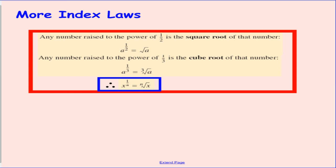Any number raised to the power of a half — that is, it has a fraction as its index, as its exponent, as its power — is the same thing as square rooting that number. So in the example here, we have a to the power of a half, and that is the same as square rooting a.